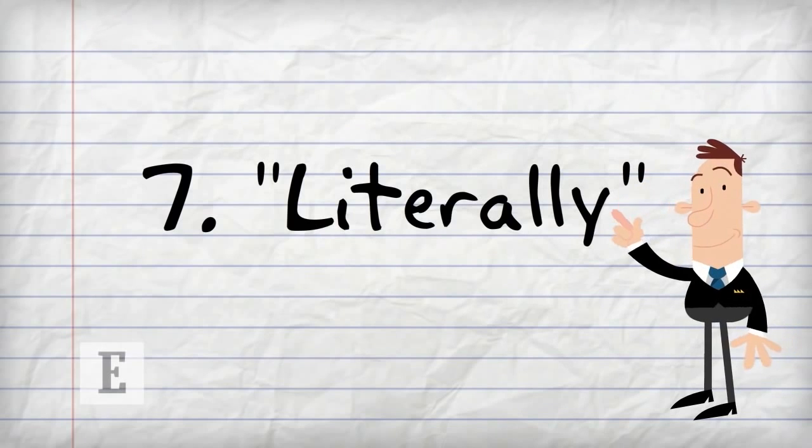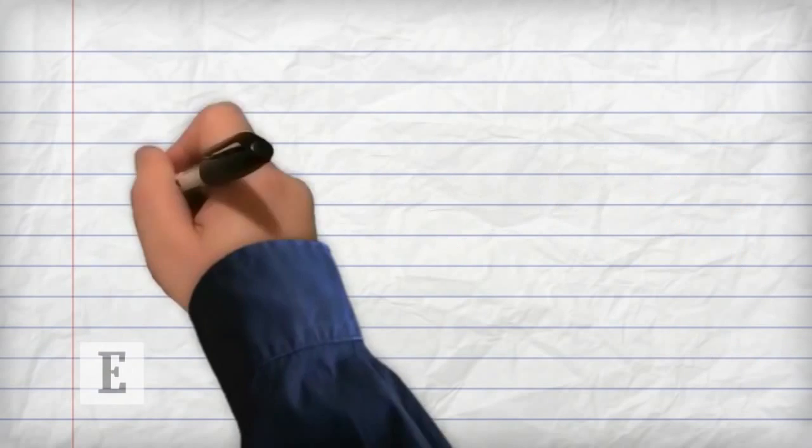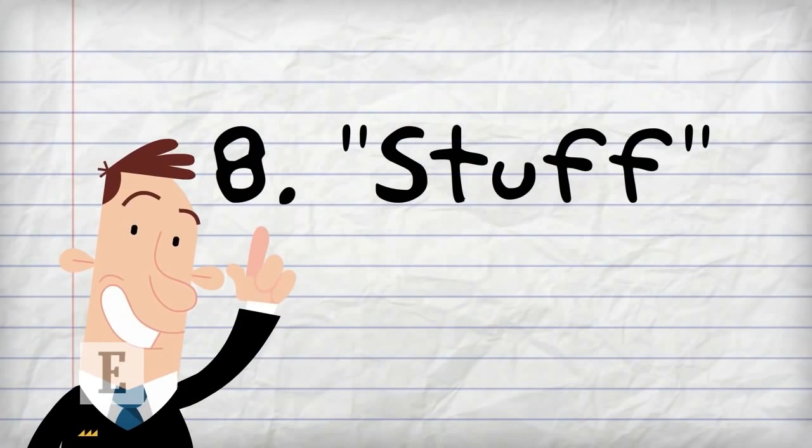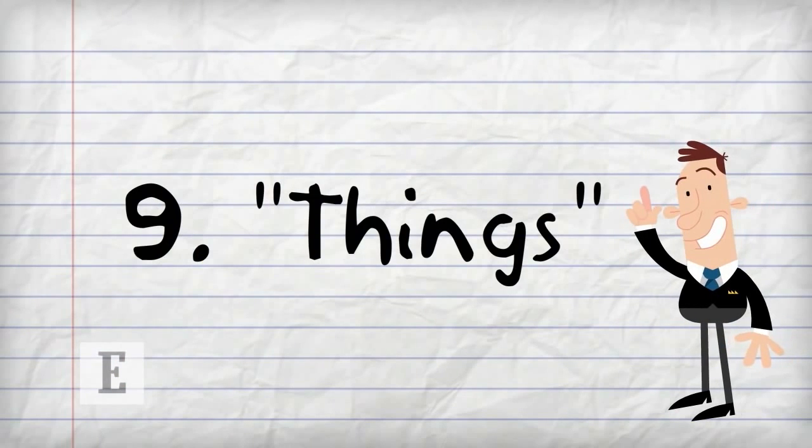Eight: Stuff. It's casual, it's generic, and it usually stands in for something better. Nine: Things. Writers use the word things to avoid using a clearer, more specific word that would communicate more meaning.